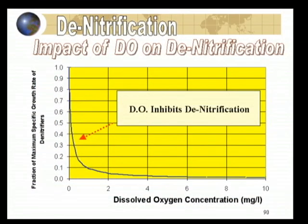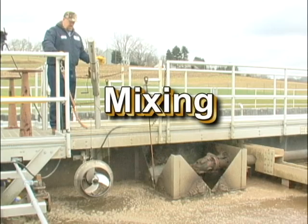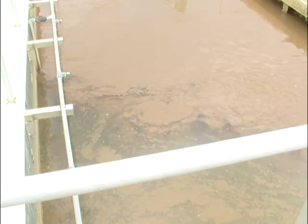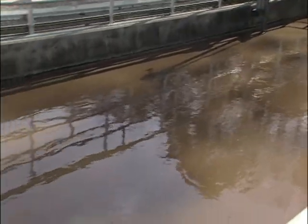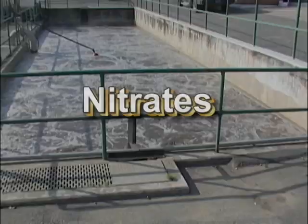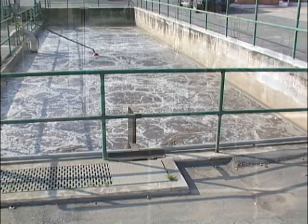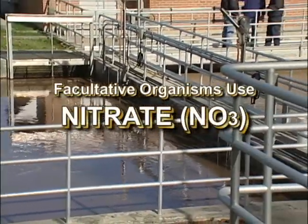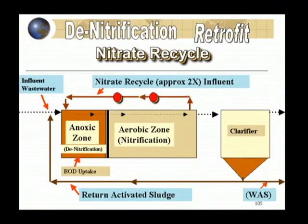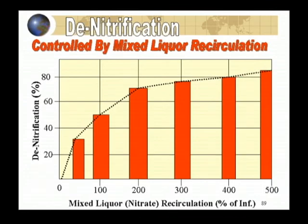As you can see from this chart, the presence of dissolved oxygen dramatically impacts the specific growth rate of denitrifying organisms. Mixing: there needs to be adequate mixing to maintain a homogeneous mixture in the anoxic zone, typically achieved with a submerged mixer. Nitrates: the facultative organisms need nitrate for respiration, typically achieved through a nitrate recycle brought back from the end of the aerobic zone. The rate of denitrification is controlled in part by the amount of nitrate recirculated, and your nitrate recycle should be at least 200% of the influent flow.